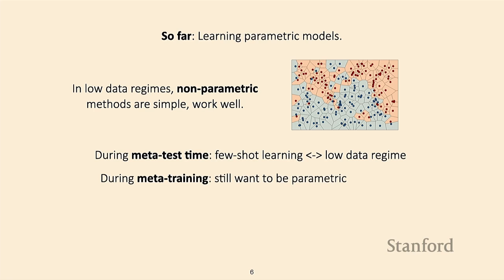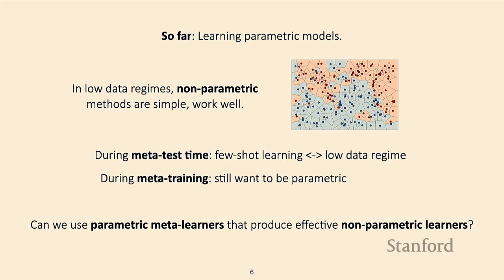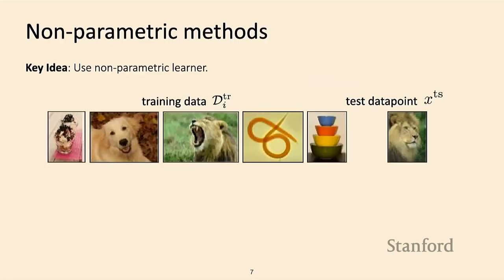During meta-training time, we potentially have a large number of tasks and want to learn good representations from the data — so we still want to be parametric during meta-training. The key idea behind today's class of methods is to use parametric meta-learners that produce effective non-parametric learners.